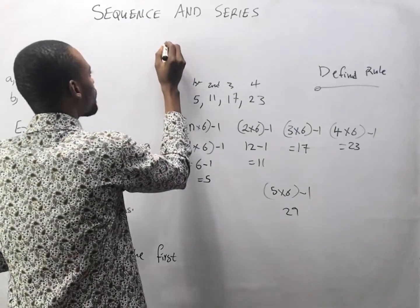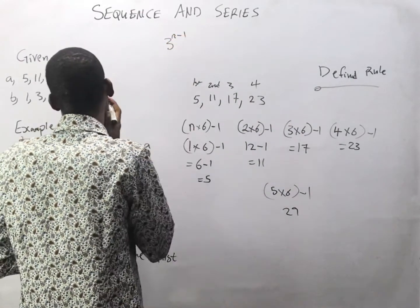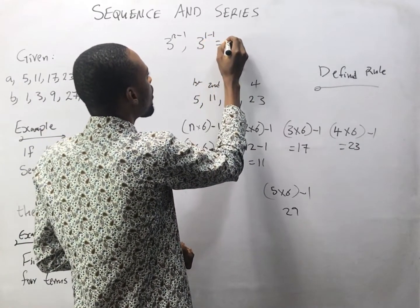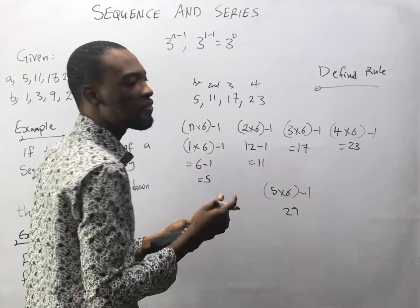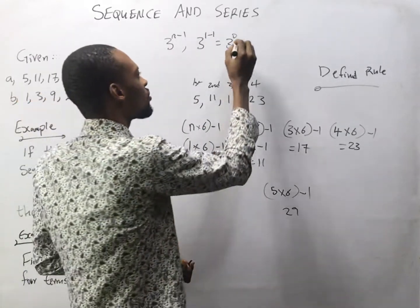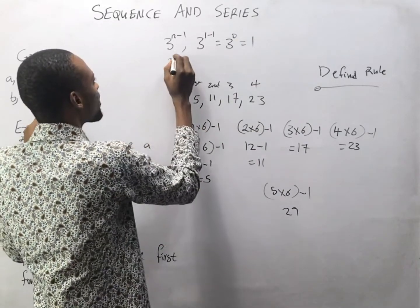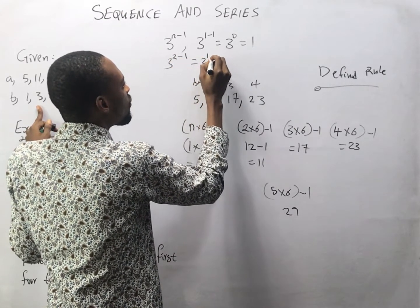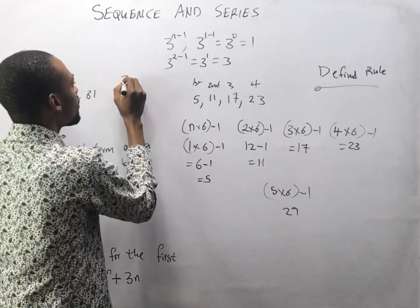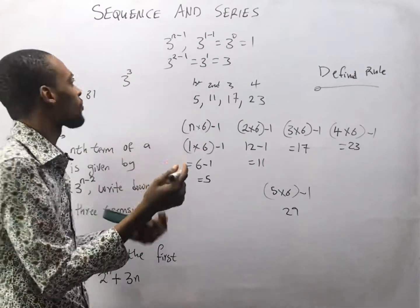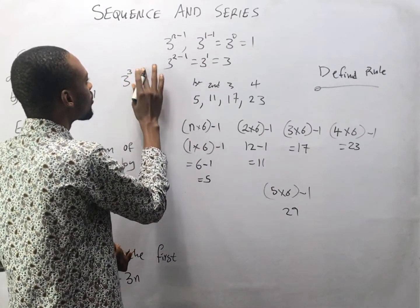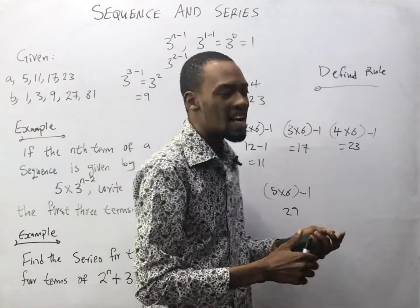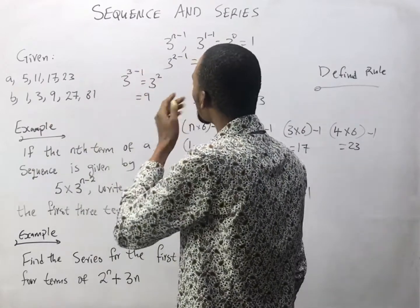Now look at this second example. If the formula is 3 raised to the power of n minus 1: for the first term, n is 1, so 3 to the power of 0 equals 1 — by the law of indices, any number raised to the power of 0 is 1. For the second term, n is 2: 3 to the power of 1 equals 3. For the third term, n is 3: 3 to the power of 2 equals 9. We've derived formulas that these sequences follow.